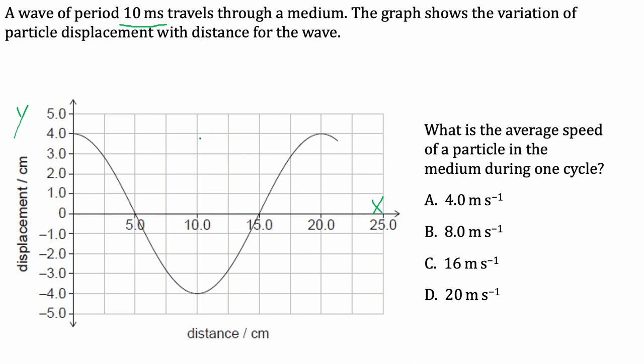The question is expecting us to calculate the average speed of the particle during one cycle, during that 10 millisecond time period. So pause the video, have a go, and then I'll go over the solution.